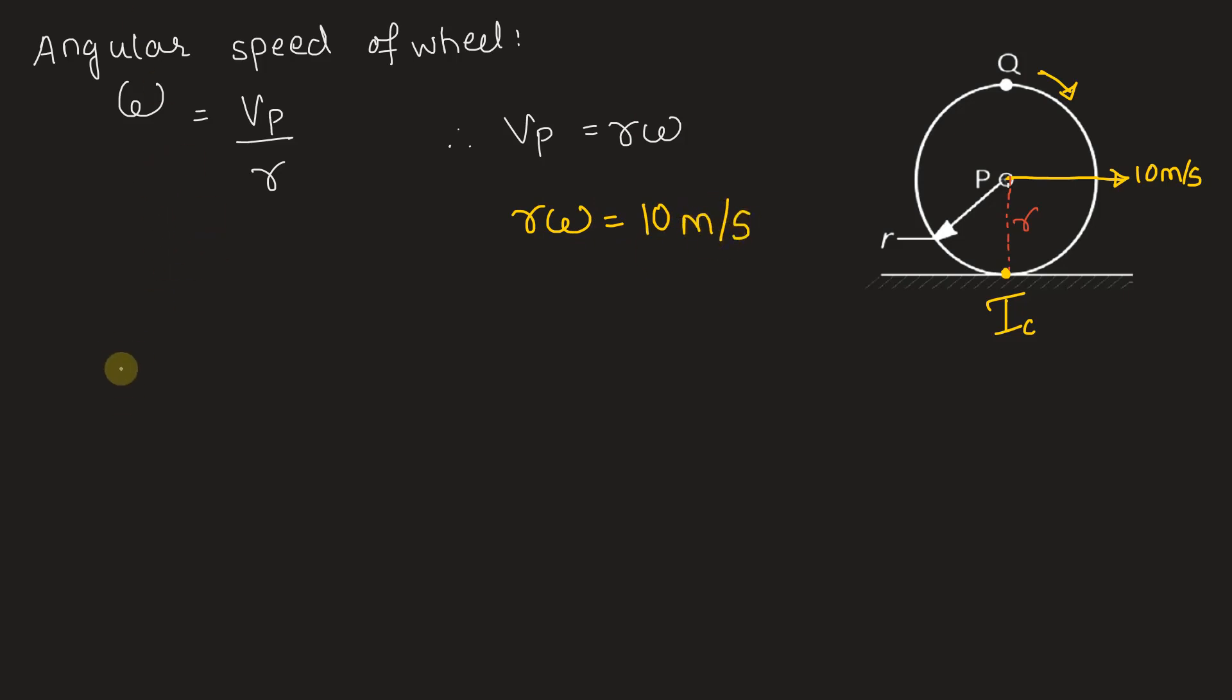Now angular velocity can also be calculated using velocity of point Q, which let it be vQ, divided by the distance from instantaneous center. This complete distance will be r plus r, that is 2r. Therefore we have velocity of point Q, vQ, is equal to 2r omega. Now we already have value of r omega from here as 10 meters per second. So we can write vQ is equal to 2 into 10, which is equal to 20 meters per second.